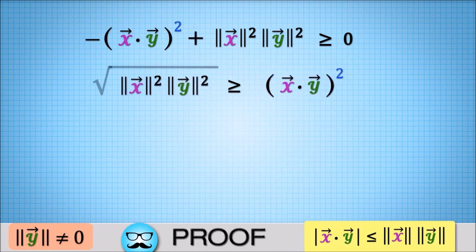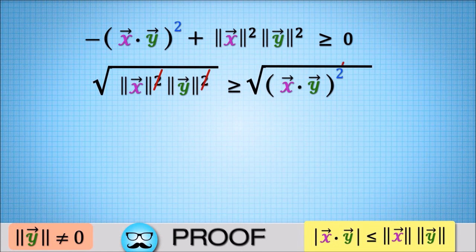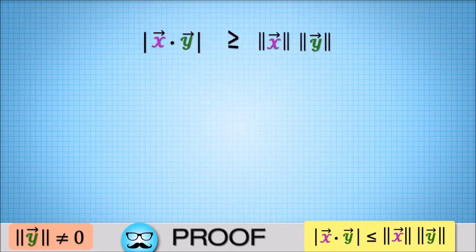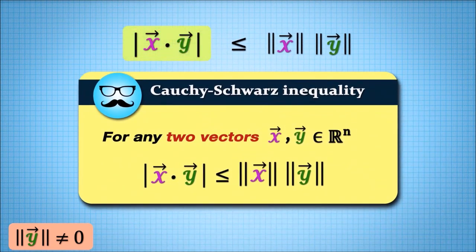Finally, take the square root of both sides to get our desired inequality. The absolute value of x dot y is less than or equal to norm of x times norm of y.